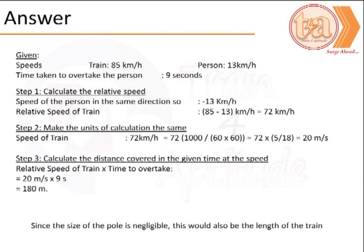The next step is pretty simple. We would need to calculate the distance covered by the train in that time, which is 20 meters per second times 9, or 180 meters. That is the answer.